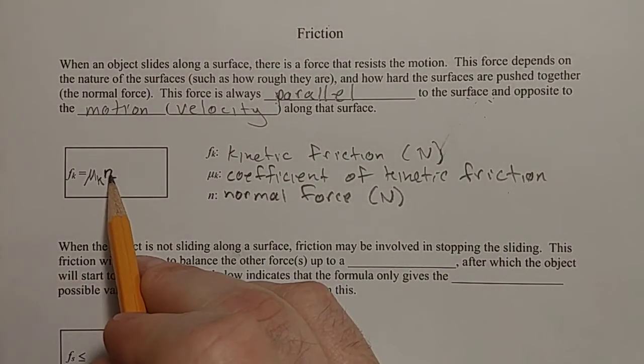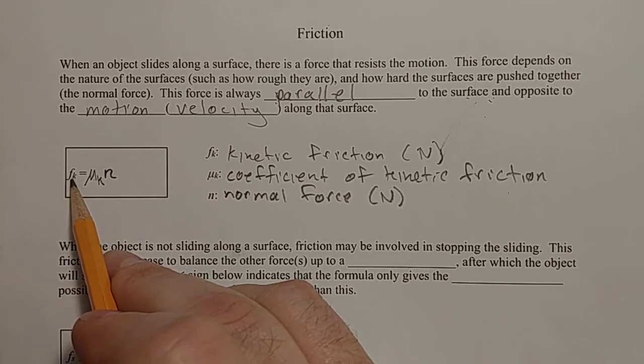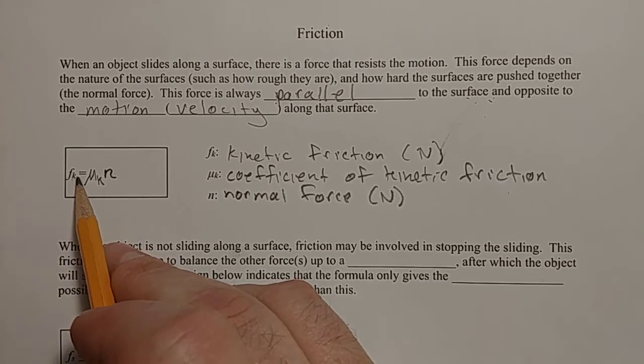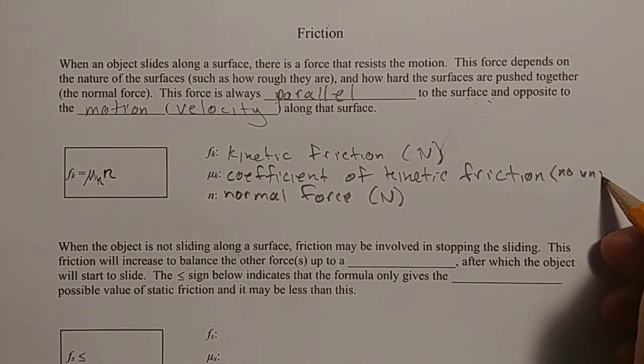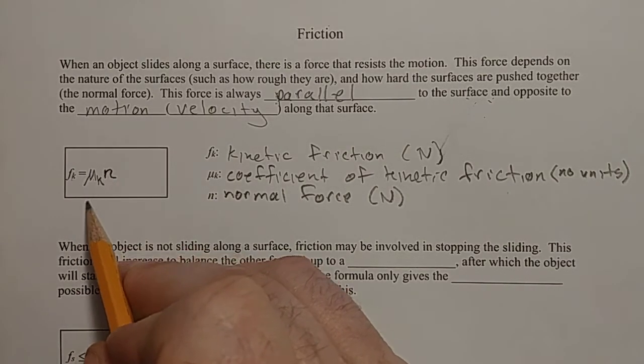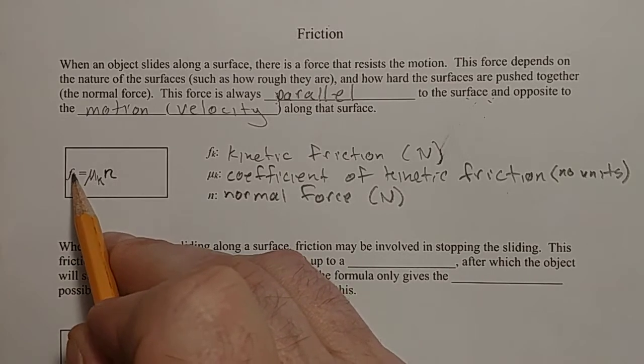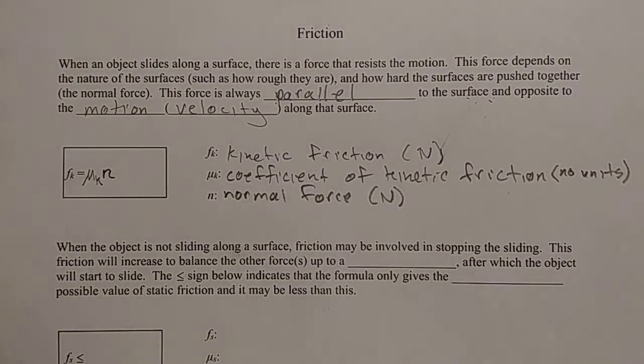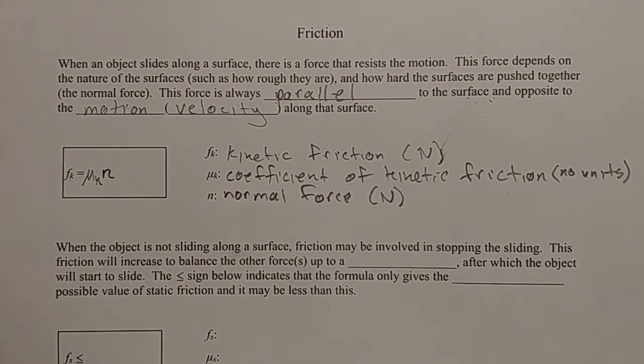Now, if I take something in Newtons and multiply it by something, and I want to get an answer in Newtons, that something can't have any units. Because if I multiply Newtons times Newtons, I'd have Newton squared. So this has no units. And in fact, it is a pure ratio. If you rearrange this and put the N on the other side, mu K is the ratio of how much friction is compared to the normal force. The friction will always be some fraction, generally less than one. There are circumstances where it can be more than one, but in general, the friction will be like one-tenth or one-one-hundredth or two-thirds of the amount of normal force pushing the two surfaces together.